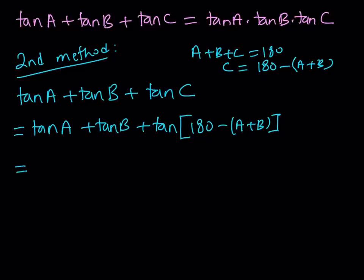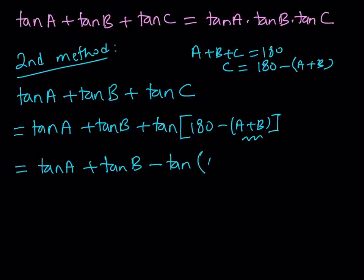The next thing I'm going to do is use that identity again: tangent of (180 minus alpha). Remember, A plus B doesn't have to be an acute angle for this to work — you can verify this with the formula. Tangent of (180 minus alpha) is always negative tangent alpha, because first and second quadrant values give you opposites. So we can write this as negative tangent of (A plus B).